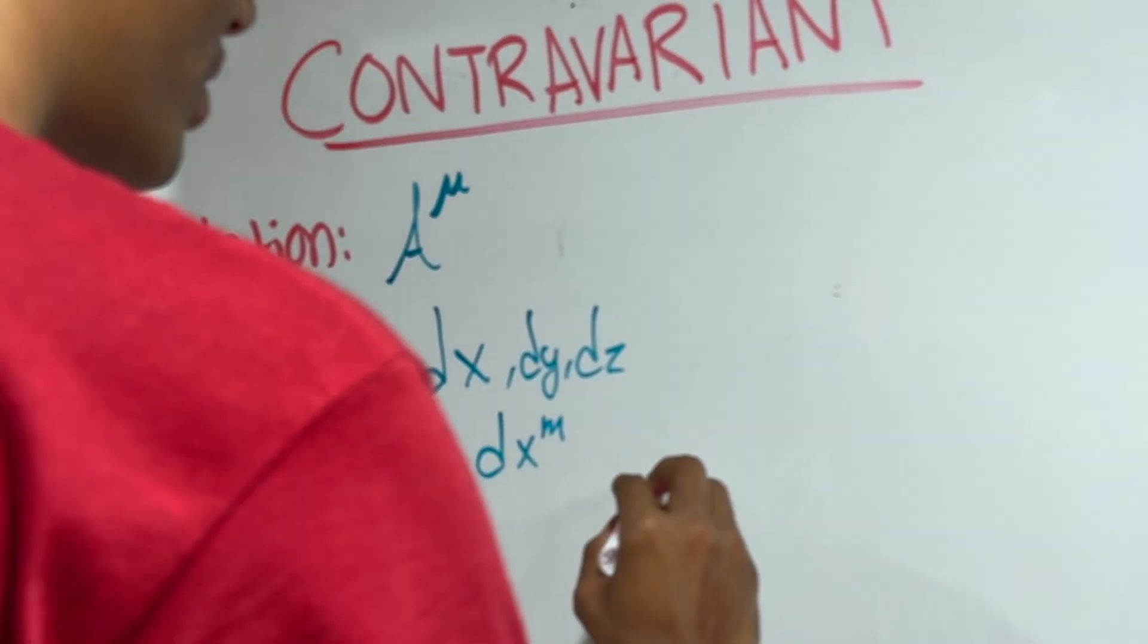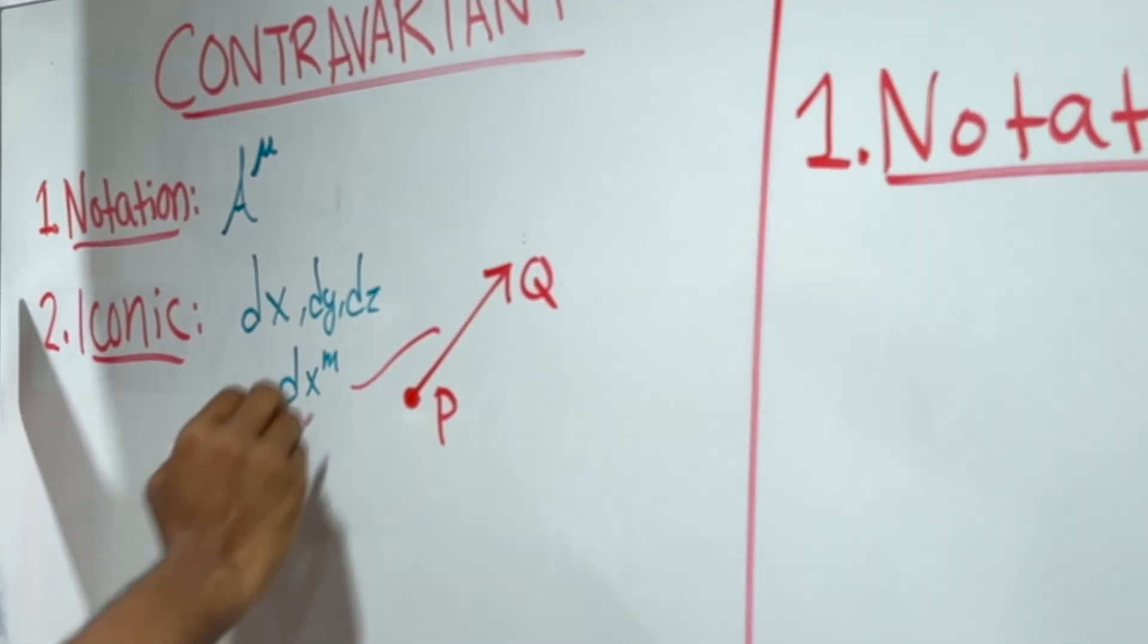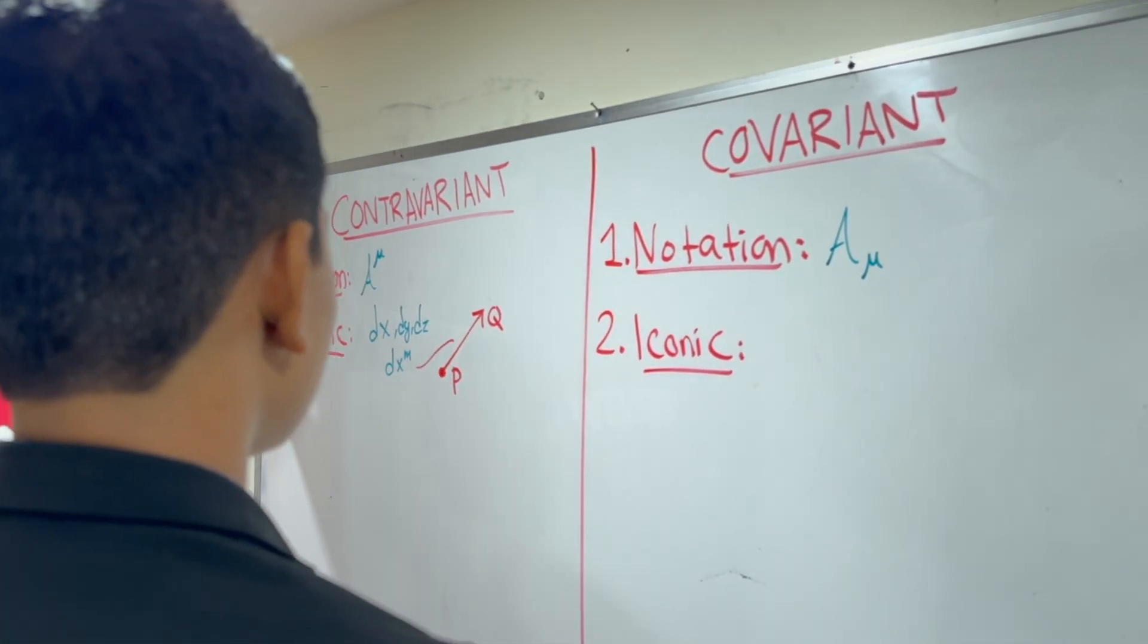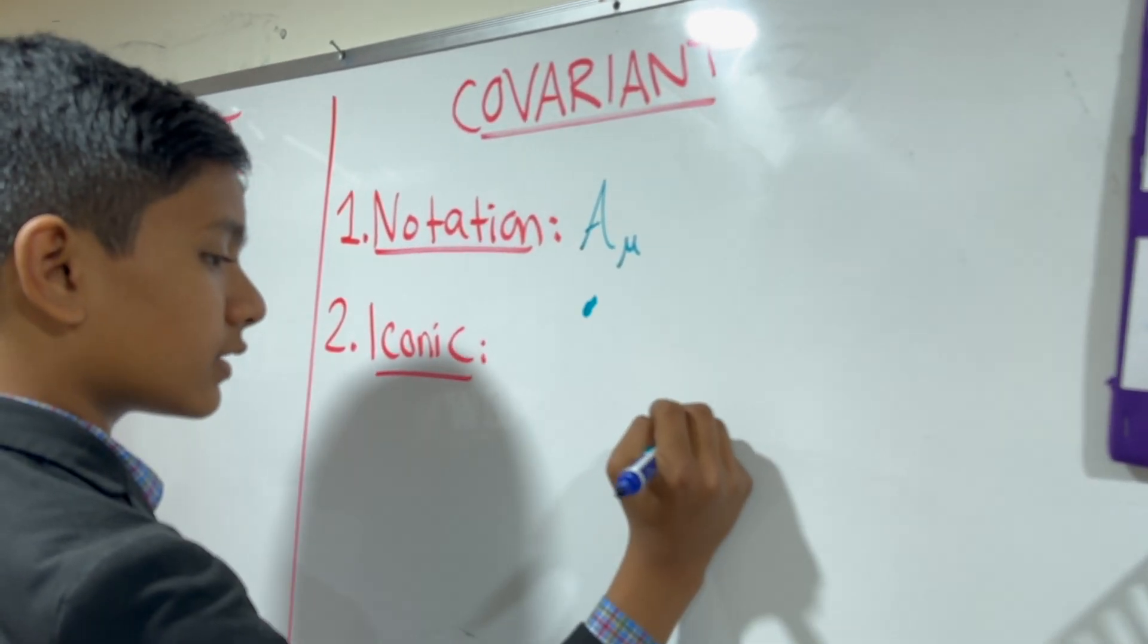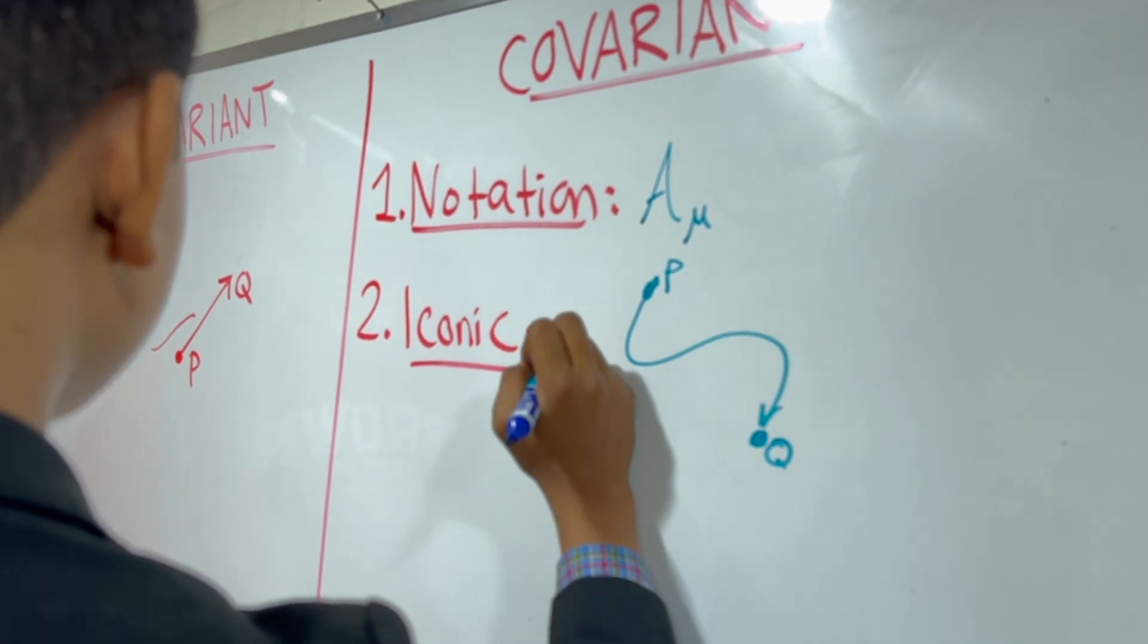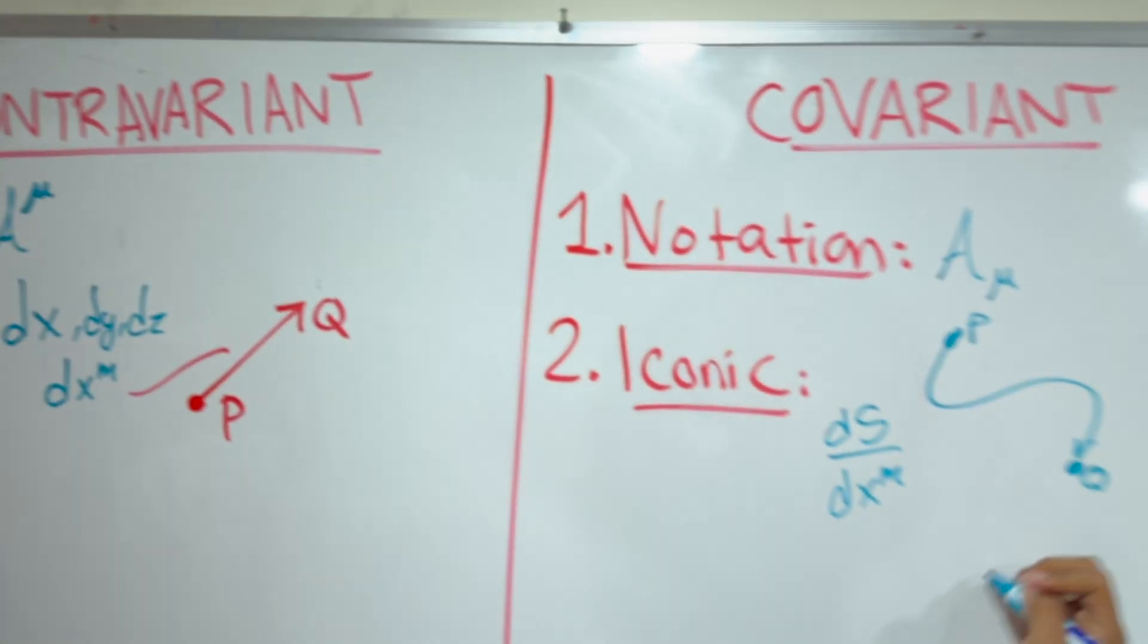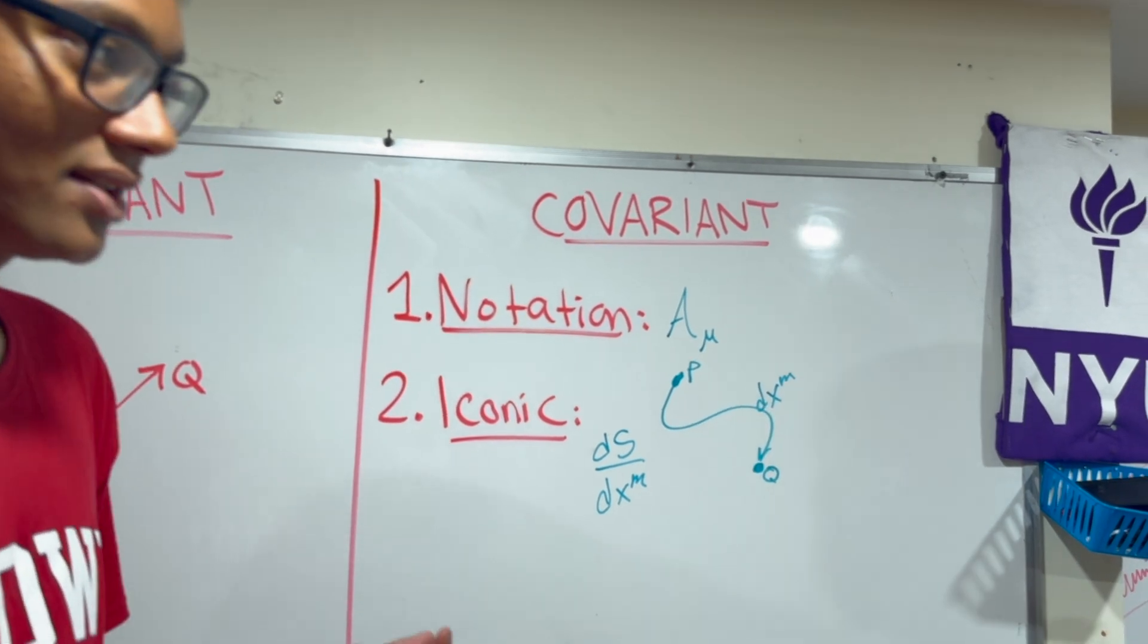Perfect. I draw that as a small step from P to Q is dxm. Can you tell me the iconic example of a covariant vector? Well, if we have a scalar field, for example, and we just want to track how the value changes when we make a little change in the direction.